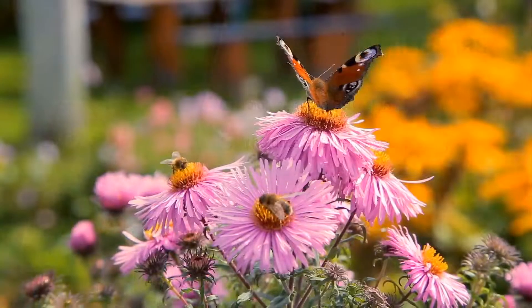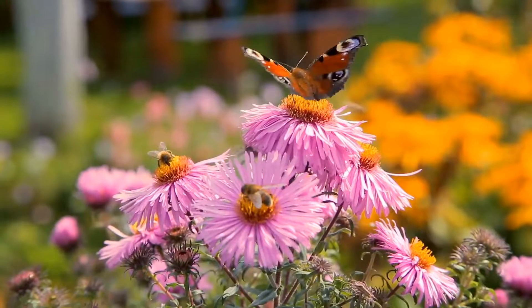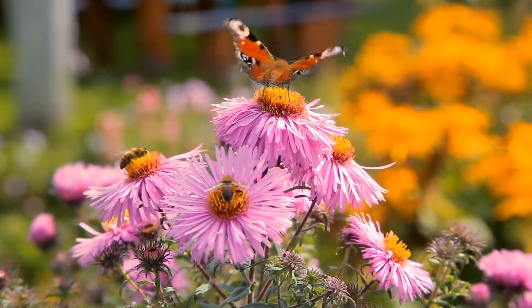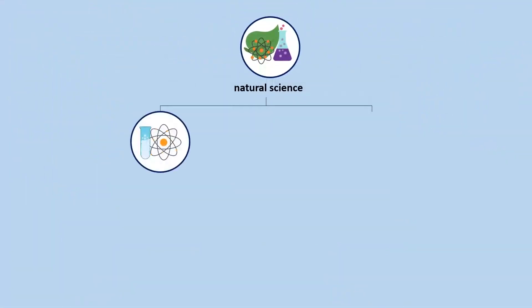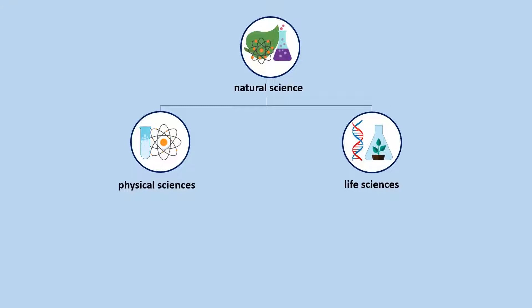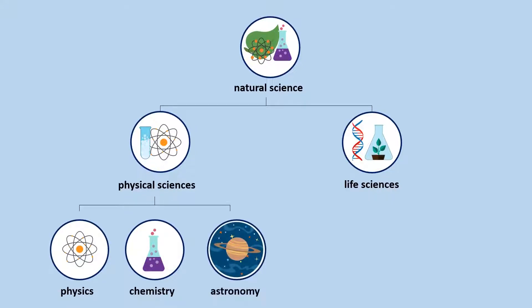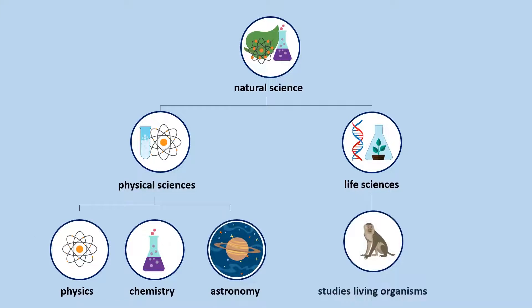Natural science is the study of all observable natural phenomena. It can be further divided into physical sciences and life sciences. Physical sciences include physics, chemistry, and astronomy. On the other hand, life sciences are concerned with the study of living organisms.